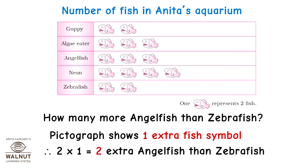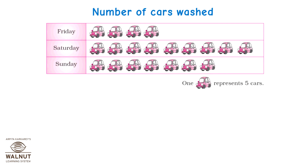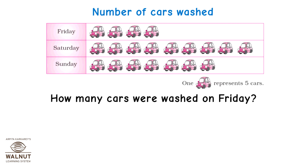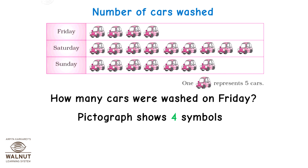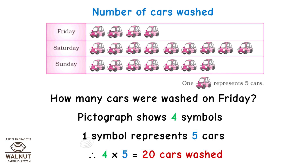Here is one more. The pictograph shows the number of cars washed on Friday, Saturday, and Sunday. Here, one car symbol in the table represents five cars in the garage. How many cars were washed on Friday? The pictograph shows four symbols; one symbol represents five cars, so 4 into 5 which is equal to twenty cars were washed on Friday.